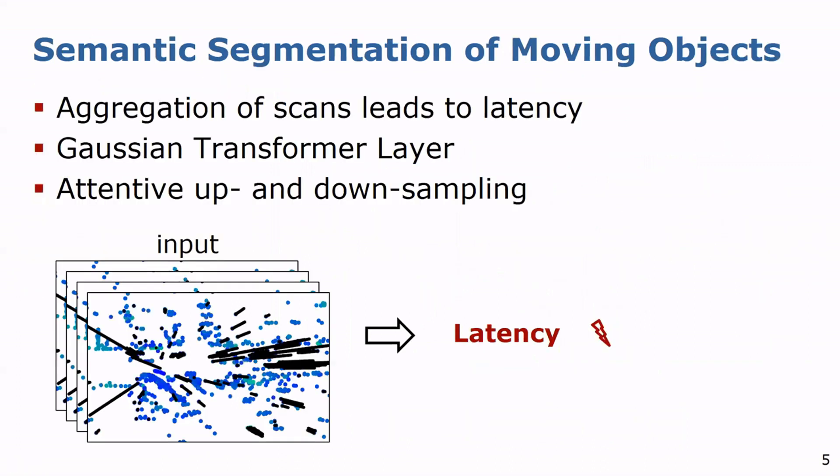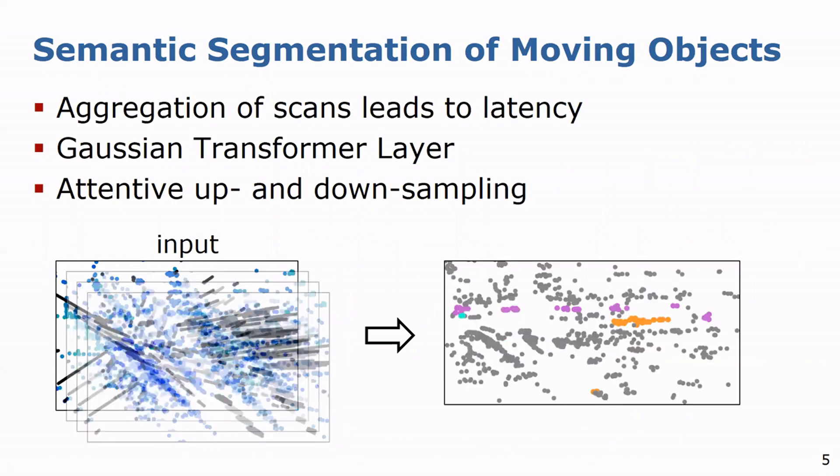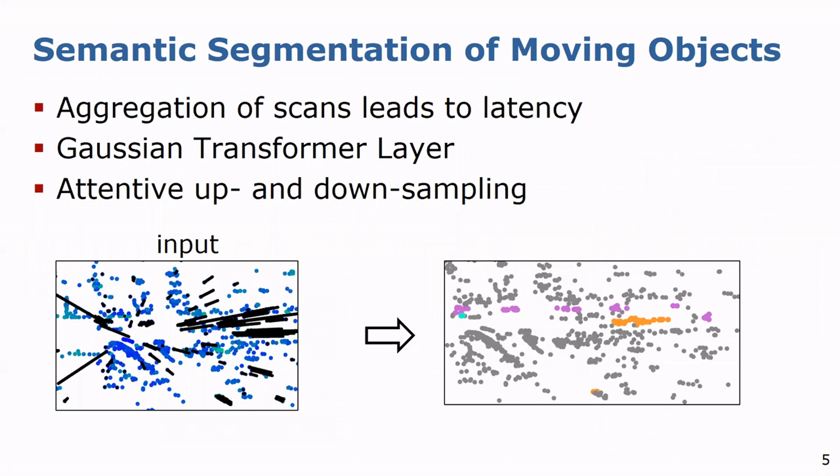State-of-the-art approaches aggregate temporal sequences of scans to densify the point cloud, which induces latencies. To overcome these limitations, we propose a transformer-based architecture, the new Gaussian transformer layer, and the attentive up and down sampling modules, to effectively extract valuable features from sparse and noisy radar point clouds.